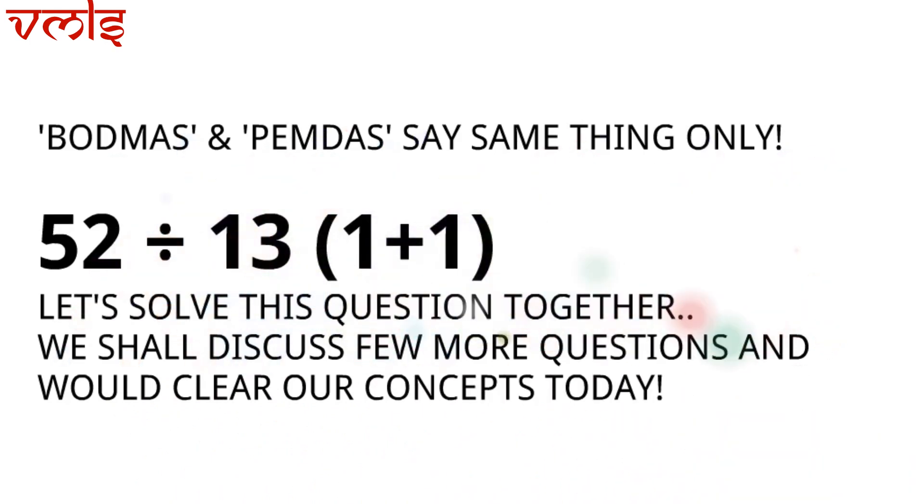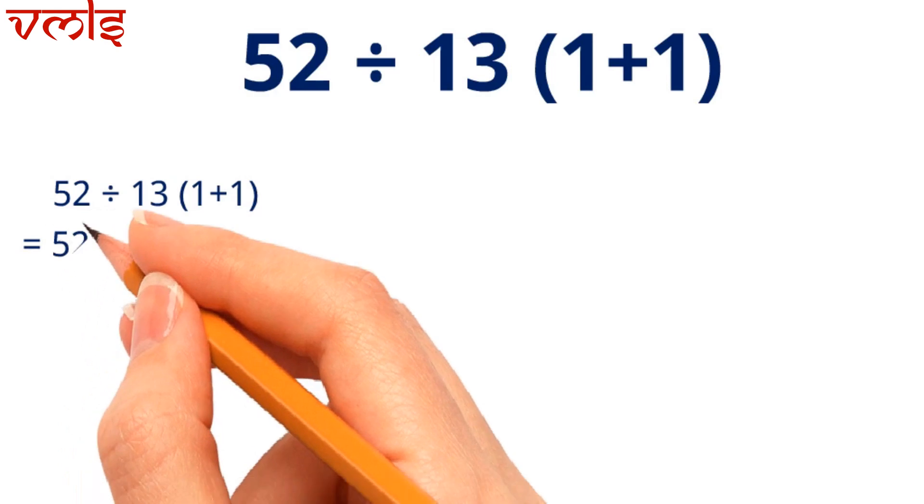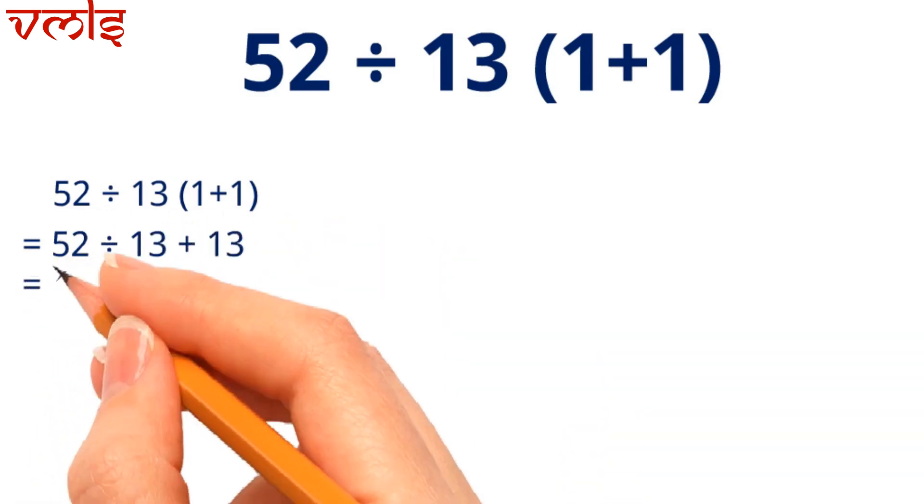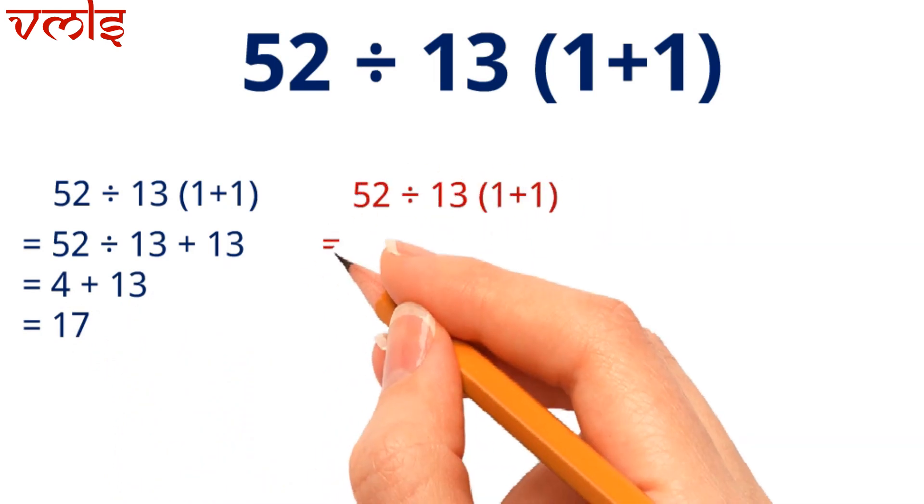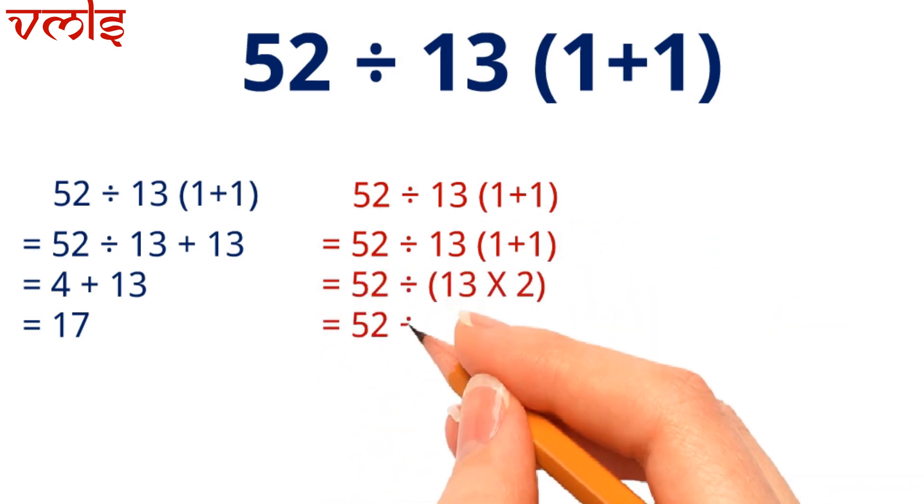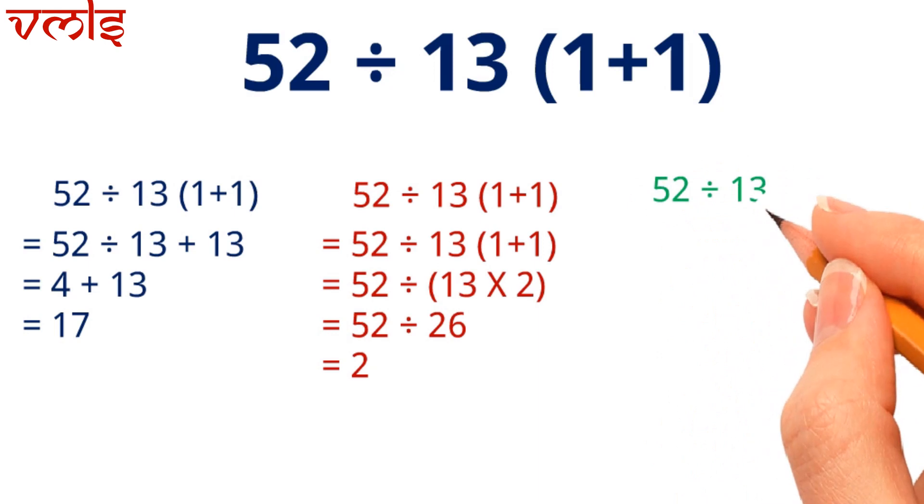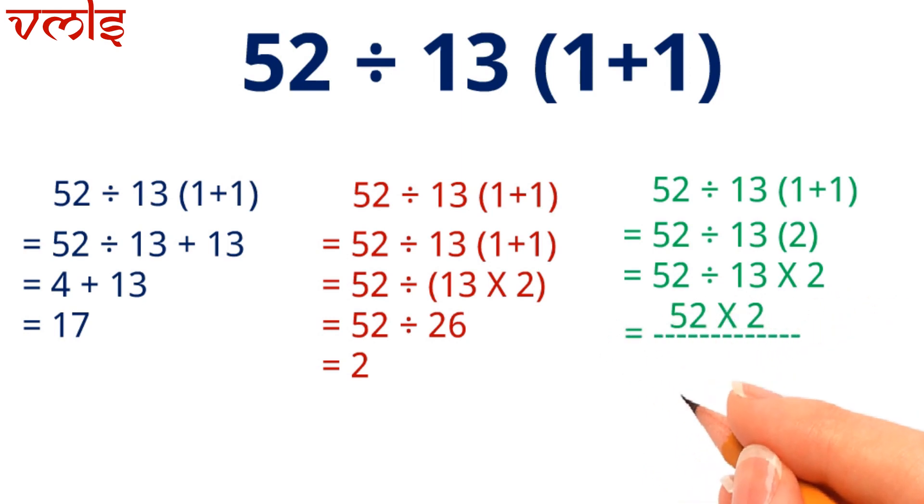For the same question, people followed three different methods. In the first method, 13 is multiplied into the bracket to get 13 plus 13, then division first, so 52 ÷ 13 = 4, plus 13 equals 17. In the second method, when 13 is multiplied with 2 it becomes 26, and 52 is divided by 26, so that's 2. And in the third method, 52 divided by 13 into 2 gives us the answer 8.